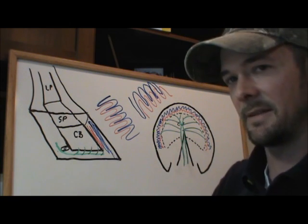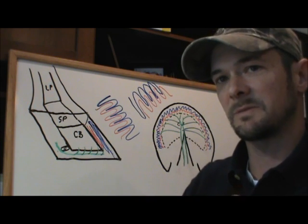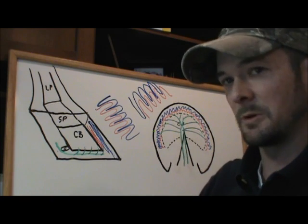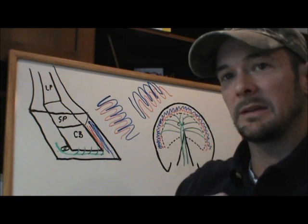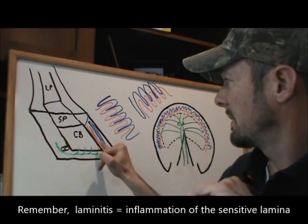So let's talk about how that happens. We'll discuss a lot of the causes and treatments for laminitis in part two, but let's just talk about how laminitis happens and what exactly it is. So again, it's primarily an inflammatory issue. It's inflammation of the sensitive lamina.